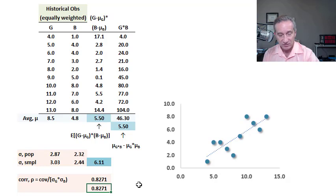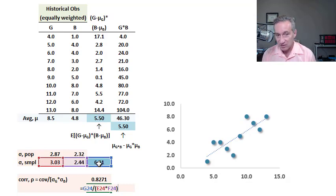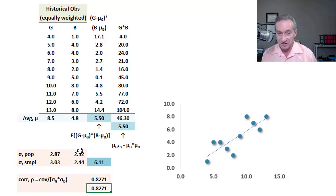What about population versus sample? A neat thing about the correlation coefficient is that the n minus 1 cancels in the sample. So I get the same result if, instead of using the population covariance, I take the sample covariance of 6.11 and divide — to be consistent — by the product of the sample standard deviations. Notice everything is a little bit higher, and then the n minus 1s cancel, giving me the same number. So the correlation coefficient doesn't need to worry about that, as long as it's consistently dividing the population covariance by population standard deviations, or the sample covariance by sample standard deviations.